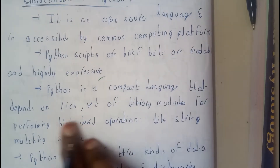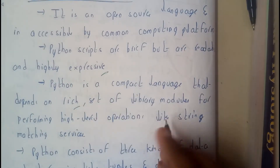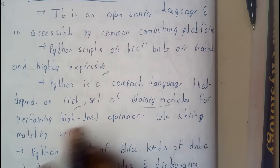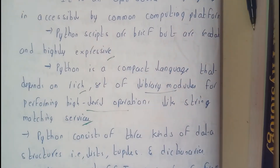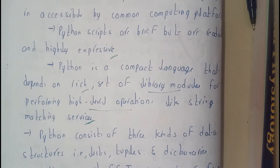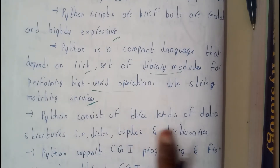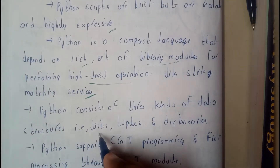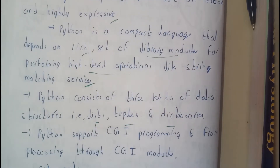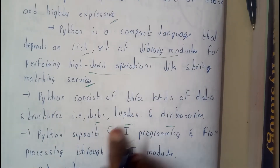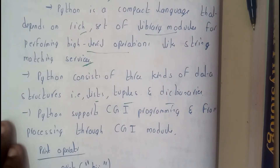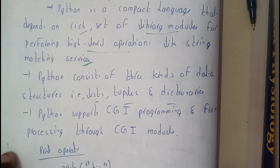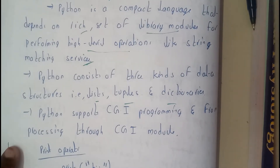Python is a compact language that depends on a rich set of library modules for performing high-level operations like string manipulations and machine services. Python consists of three kinds of data structures: lists, tuples, and dictionaries. These are really interesting topics in Python, but they are not included in our syllabus so I am not going to cover those.